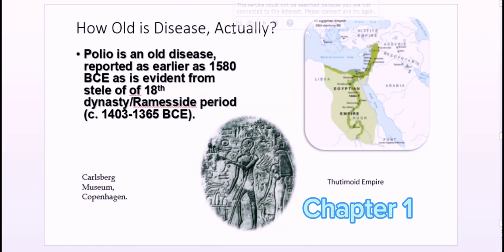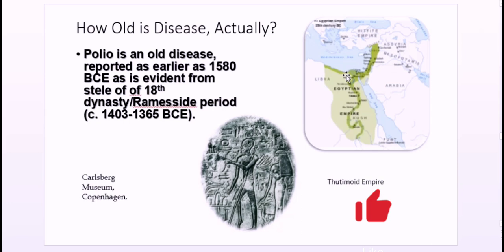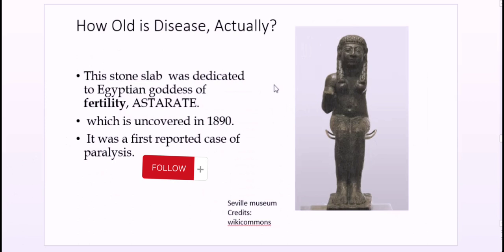How old is the disease actually? If you look at the picture, it is one of the maps of the 18th dynasty of the Egyptian Ramesside period, which was from 1403 to 1365 BC. We have found a stone slab from the Ramesside period which lies at the Goldberg Museum in Copenhagen. Interestingly, one of the figures in this slab is polio-affected, showing that the disease was known and prevalent at that time. This stone slab is dedicated to the Egyptian goddess of fertility, named Ashtoreth, and was uncovered in 1890.